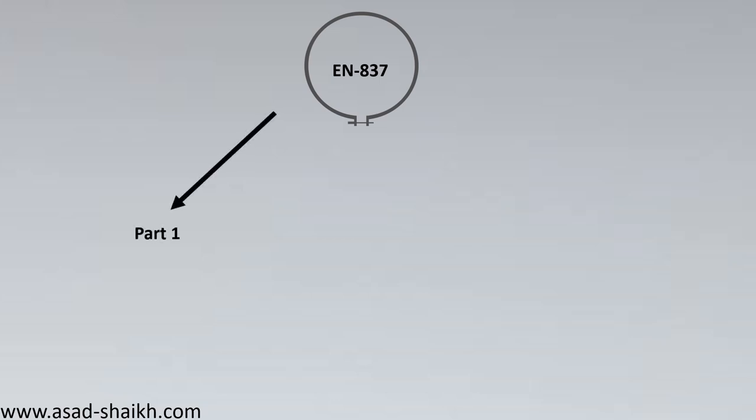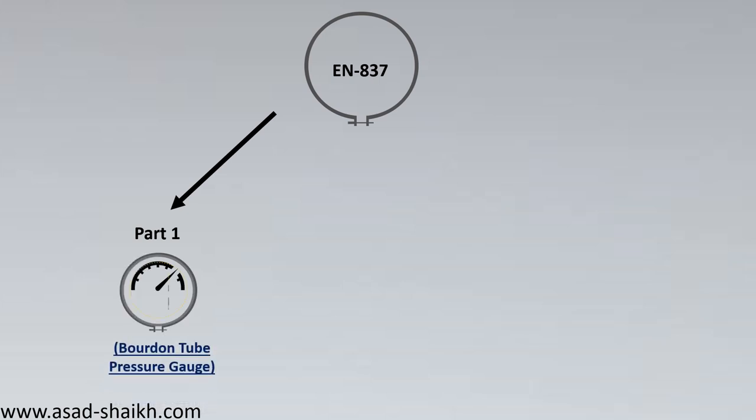Now let's look at EN 837, which is also a valuable standard. It has three simple parts. Part 1 deals with Bourdon tube pressure gauges, which are preferred for medium to high pressure applications and are among the most widely used.